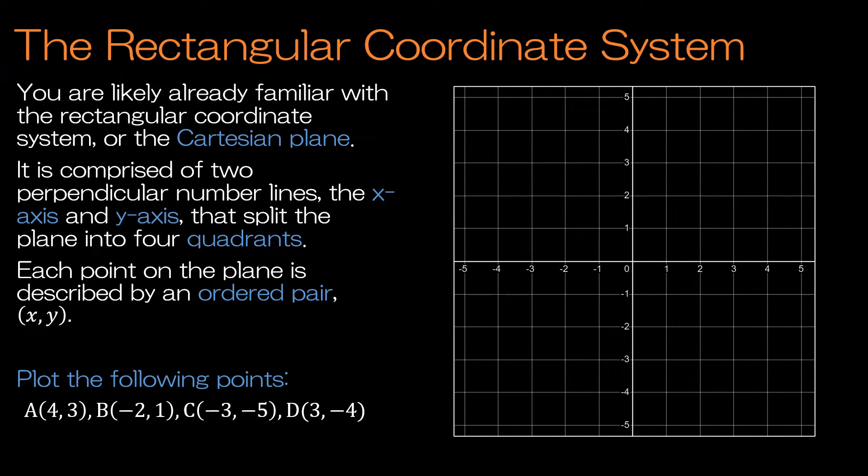Hopefully we all know there is an x-axis, there is a y-axis, and there are four quadrants. This is the first quadrant, and then it just goes in counterclockwise order in Roman numerals. So 1, 2, 3, 4, and of course we know that the origin is right in the middle.